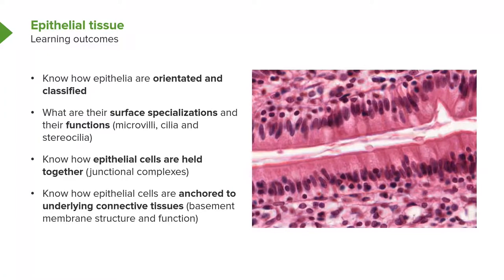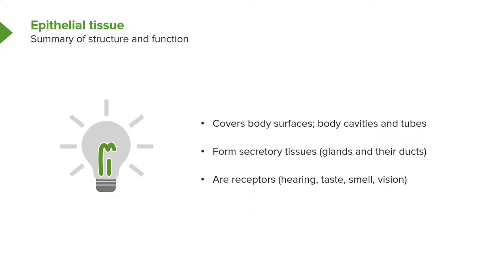At the end of this lecture, I would like you to understand the following: firstly, that epithelial cells are orientated in certain ways; they're classified or named differently depending on how they appear and in some instances their functions; they have certain surface specialisations with important roles; epithelial cells are tightly held together by junctional complexes; and epithelia are tightly anchored to underlying connective tissue.